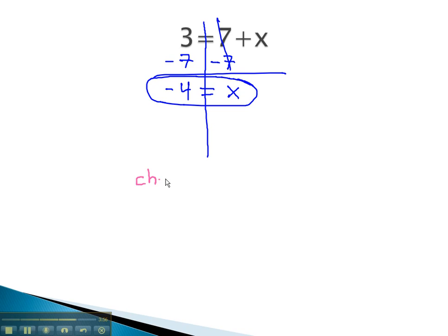Again, we can verify our solution by checking it, plugging our solution we found in for x in the original equation. The original equation was 3 equals 7 plus x, or plus negative 4. We want to know, are those equal? Is that a true equation? Well, 7 and negative 4, the positive is bigger, and 7 minus 4 is 3. 3 does equal 3. We have a true equation, so we know our answer is the correct answer.